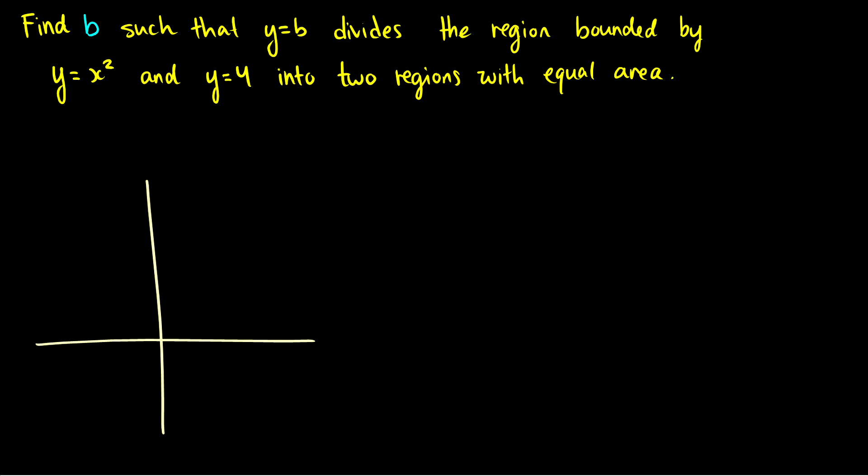So y equals x squared. What does y equals x squared look like? Well it's a parabola and it is symmetric on both sides. So we have a graph that would look like this and it's bounded by y equals x squared and y equals four.